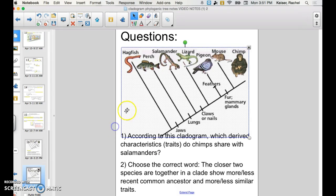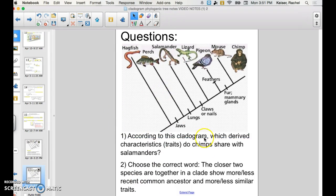So the questions to answer in your notebook. Remember, there is no Google form. You have to answer them into your notebook. According to this cladogram right here, which derived characteristic or trait do chimps share with salamanders? Then number two, you're going to choose the correct words from the sentence. The closer the two species are together in a clade, do they show more or less recent common ancestor? And do they show more or less similar traits?